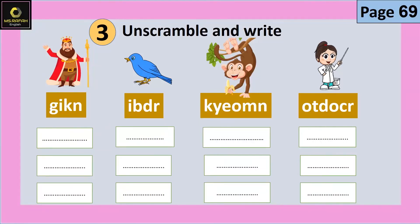Unscramble and write — أعد الترتيب واكتب. King: K-I-N-G. Bird: B-I-R-D. Monkey: M-O-N-K-E-Y. Doctor: D-O-C-T-O-R.